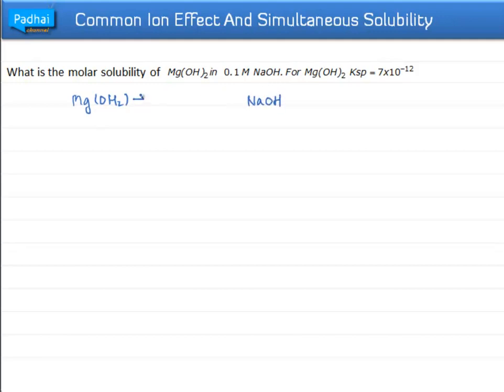We can write the Mg(OH)2 equilibrium equation as Mg²⁺ plus 2OH⁻. For NaOH, we can write Na⁺ plus OH⁻.